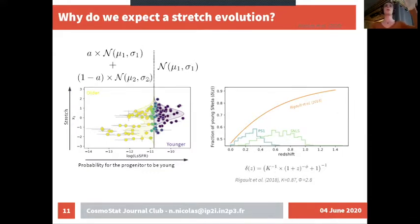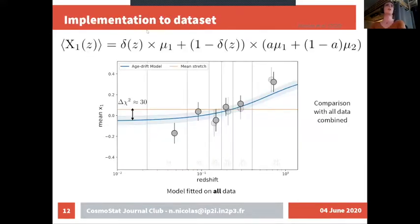We're trying to have the mean stretch from this distribution and it's simply the fraction of young stars times the mean of the young distribution, which is a Gaussian, so it's mu 1, plus the fraction of old stars, 1 minus the fraction of young, times the mean distribution of the old stars, which is a linear combination between two Gaussians.